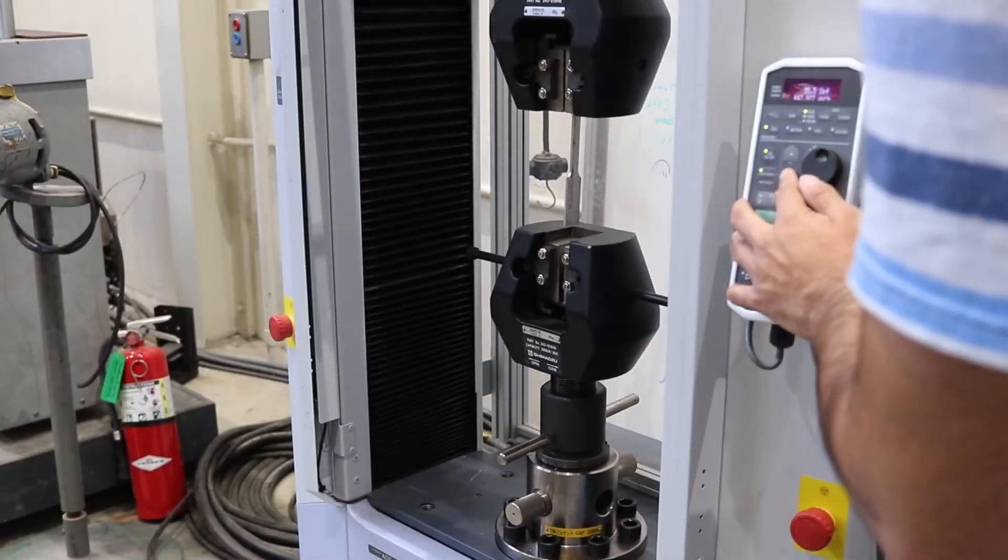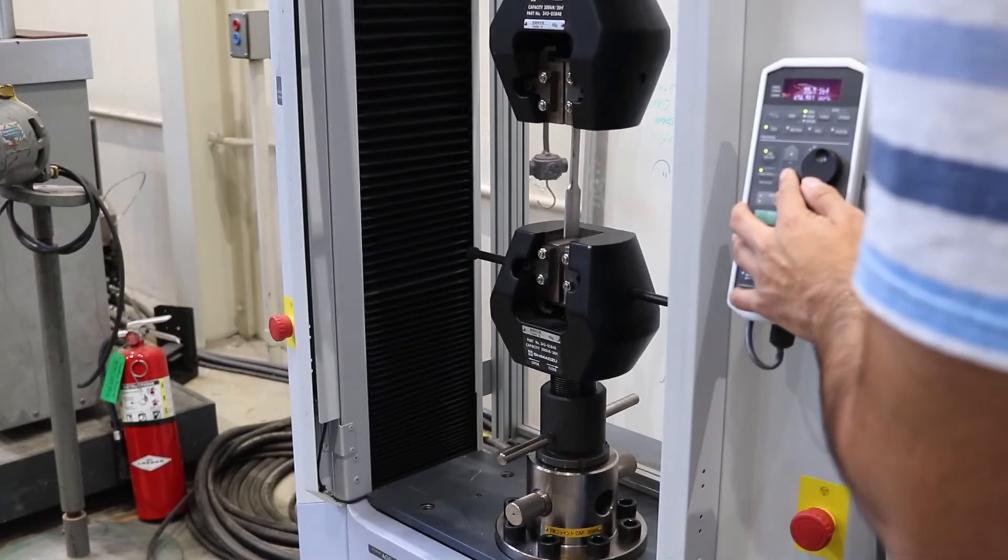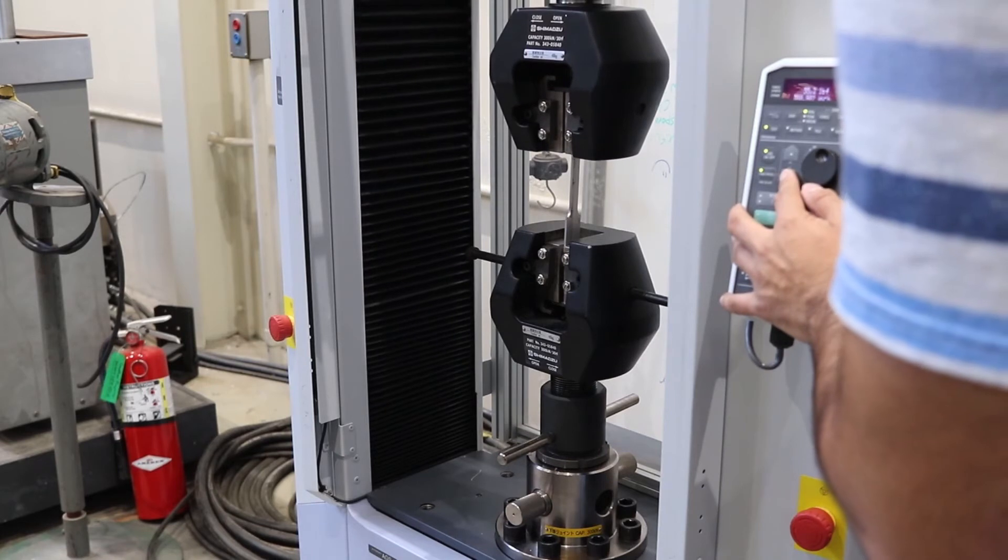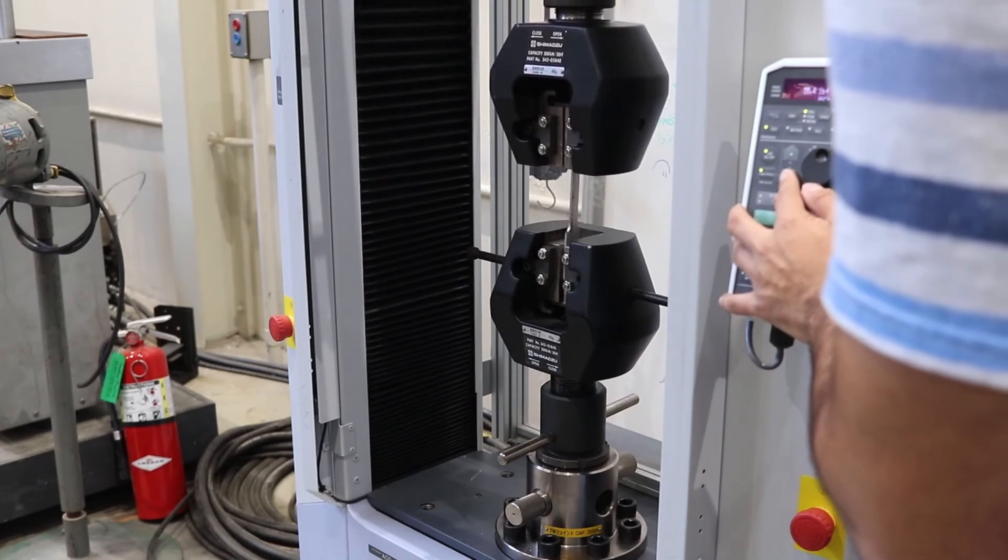Now that the upper jaw is secure, we need to jog the machine down so we can secure the lower jaw. To do so, we click Jog On Off, High Speed, and press the Down button. Again, the specimen should align with the scribe in the face of the jaw.